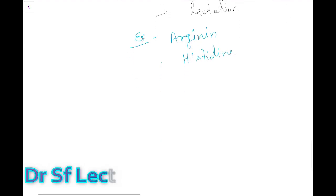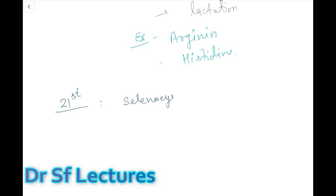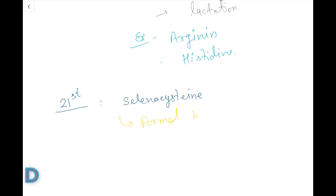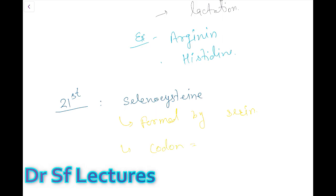There is also a 21st amino acid, called selenocysteine. It is formed from serine, and its codon is UGA.